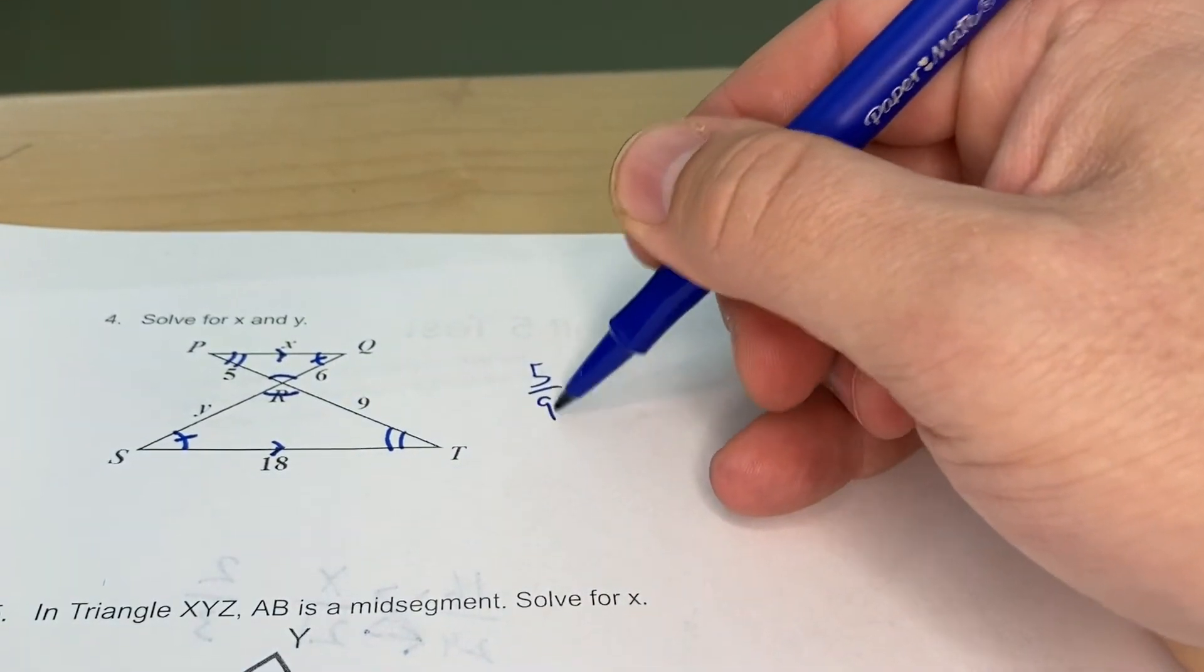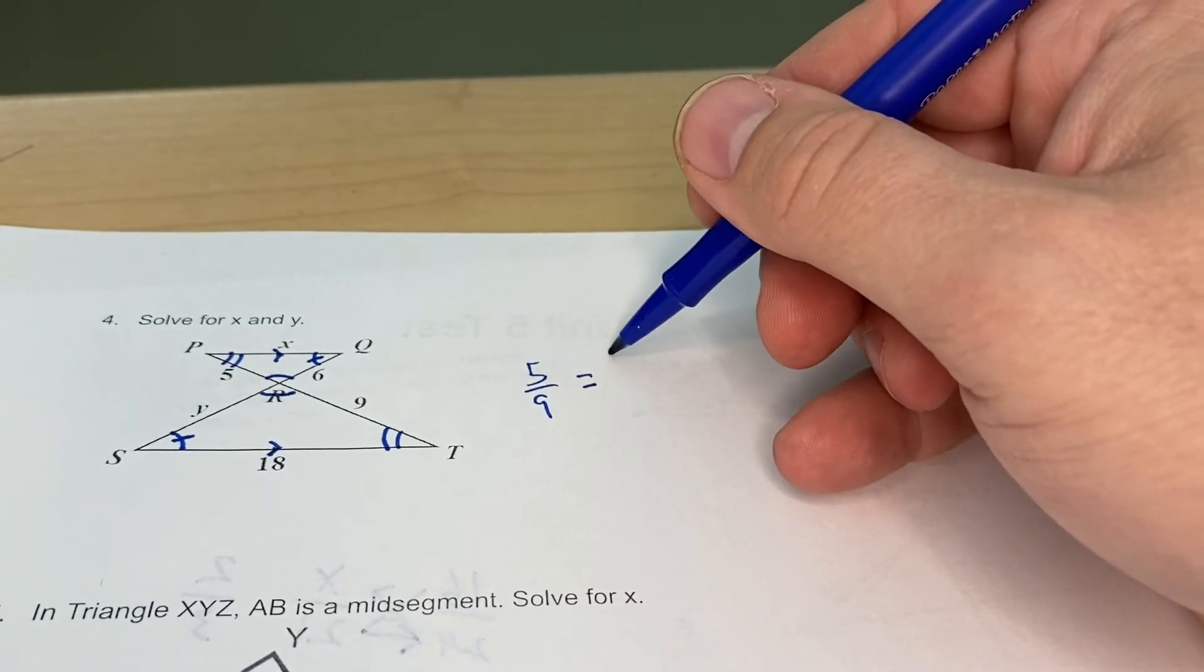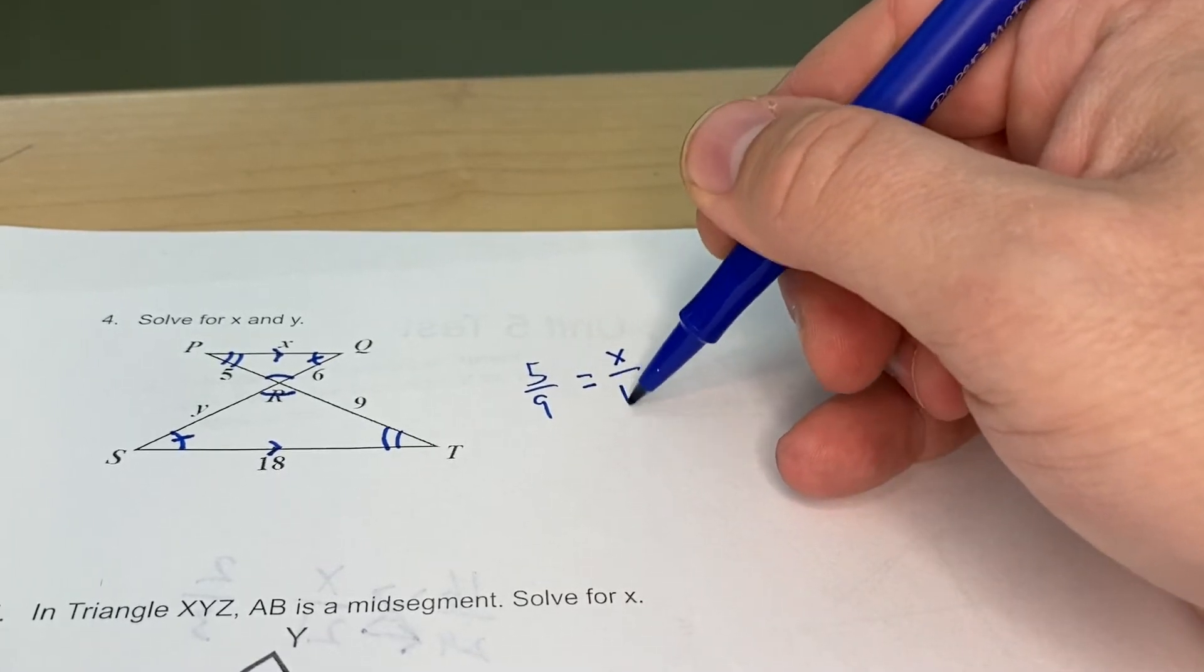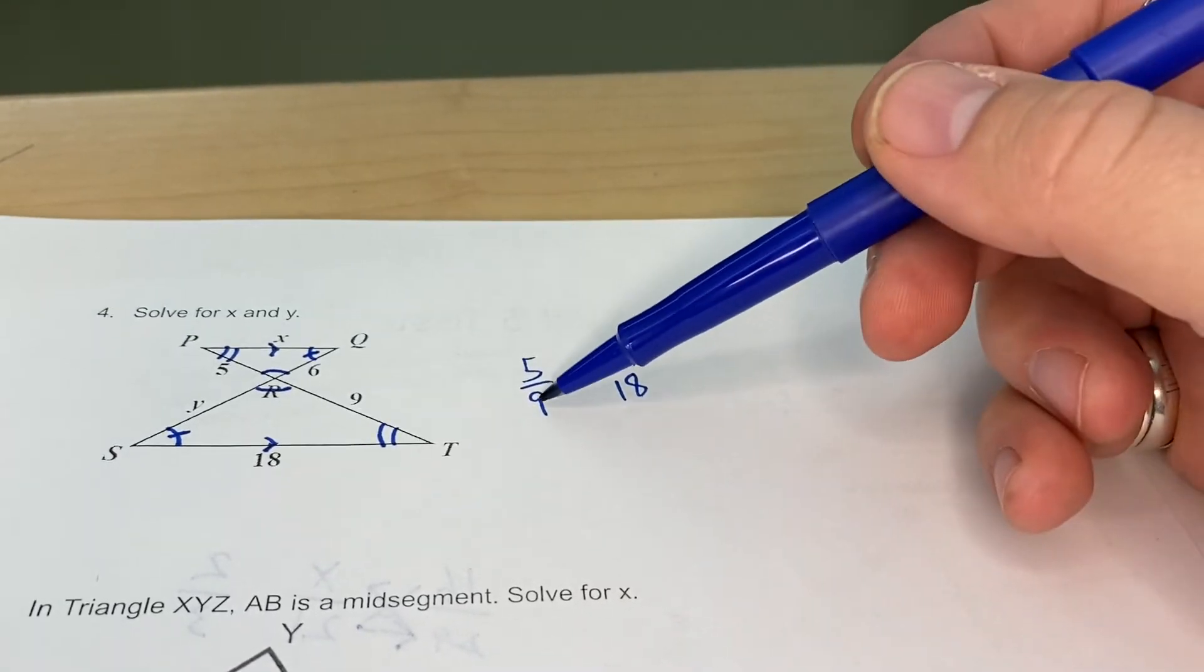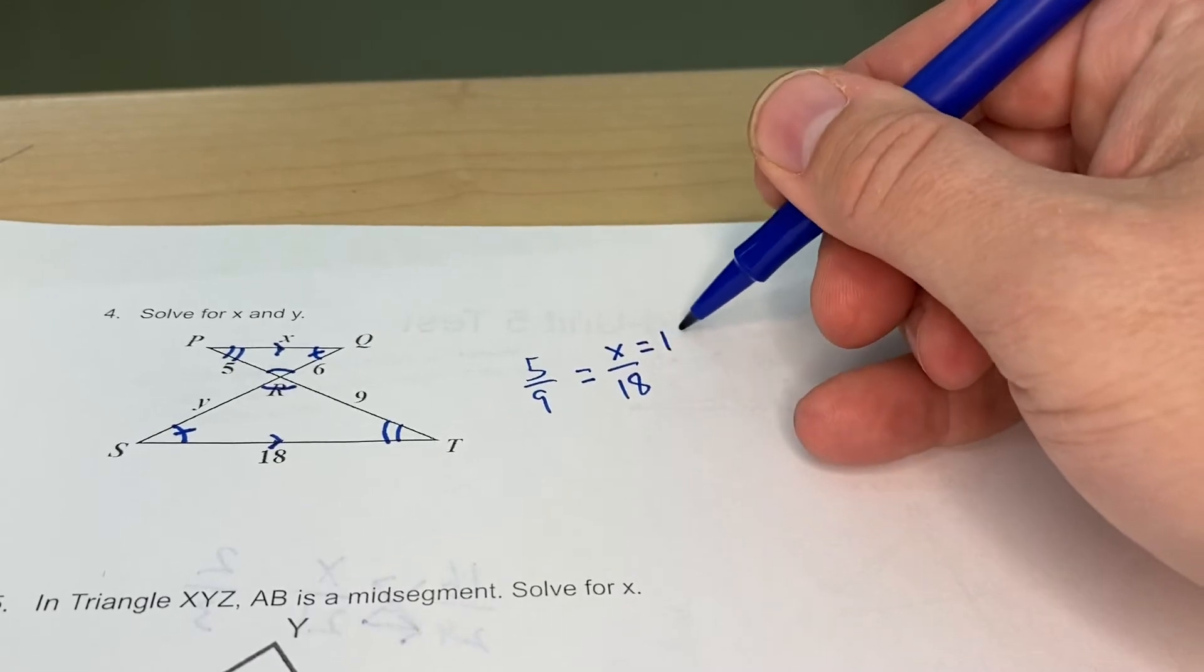So 5 is to 9 as I'm going to go ahead and solve for x first. That's going to be x over 18. This one's fairly simple. I've got 9 times 2 is 18, so 5 times 2 means x is going to be 10.